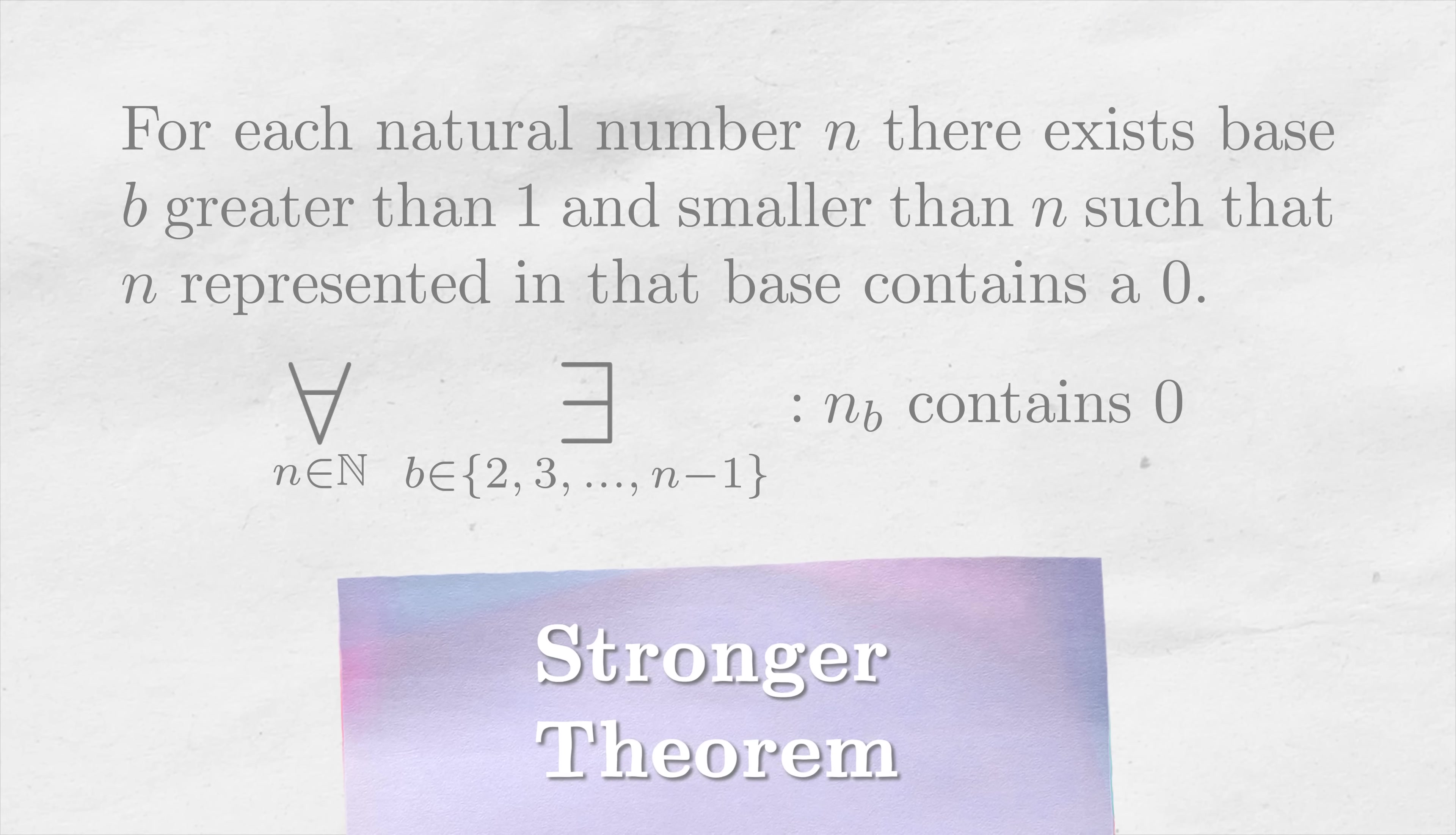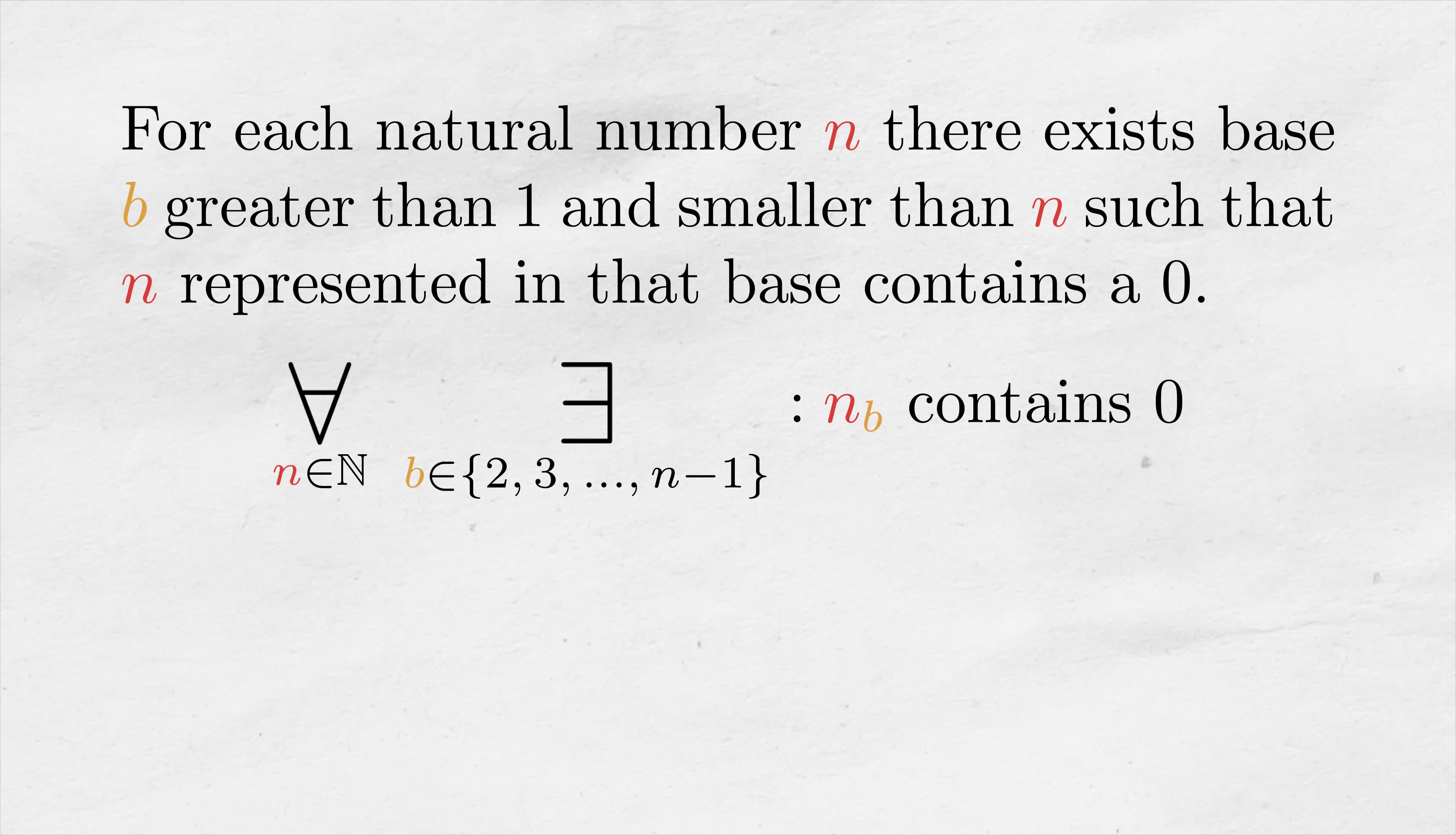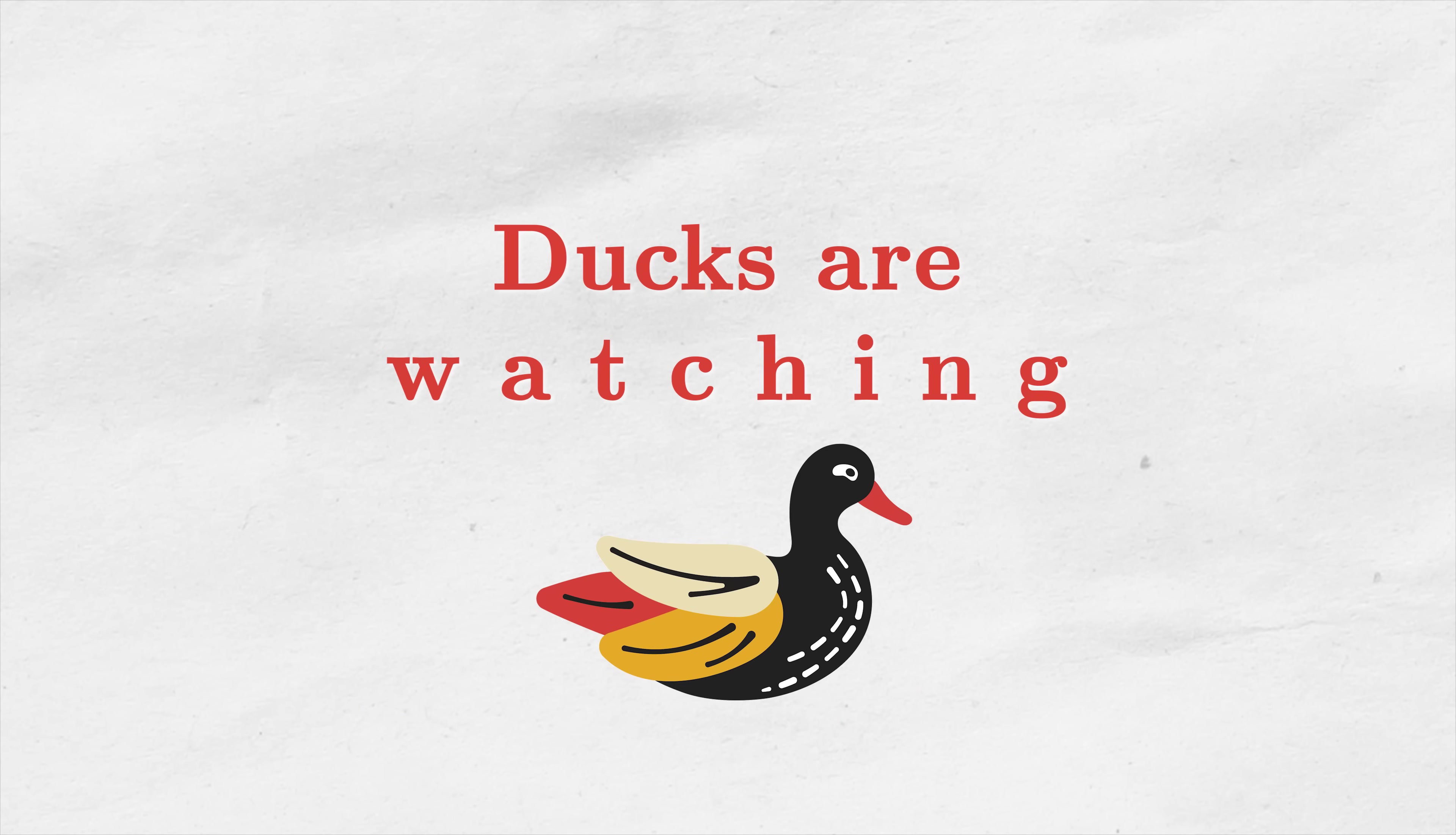That's why I'm stating this stronger theorem, that for each natural number n, there exists a base b greater than 1 and smaller than n such that n represented in that base contains a 0. Oh, don't forget about our initial goal. This theorem will of course imply that all numbers are duck numbers. Remember, ducks are watching.